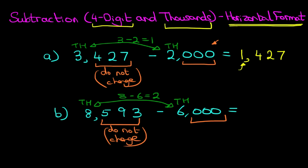Therefore, the answer is 2593. Now did you notice? Only the thousands changed. And it really is that simple. Subtraction of a four-digit number and thousands using the horizontal format.